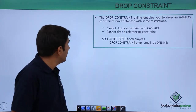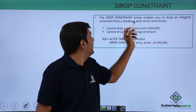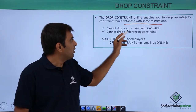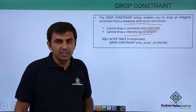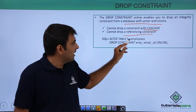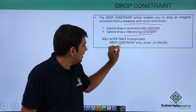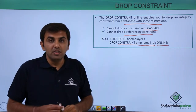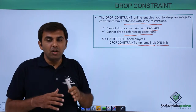Next is drop constraints. Drop constraints online enables you to drop integrity constraints from the database with some restrictions: you cannot drop constraints with cascade, and you cannot drop reference integrity constraints. To drop a constraint, use: ALTER TABLE employee_table DROP CONSTRAINT constraint_name ONLINE. In this way you can drop your constraint online.